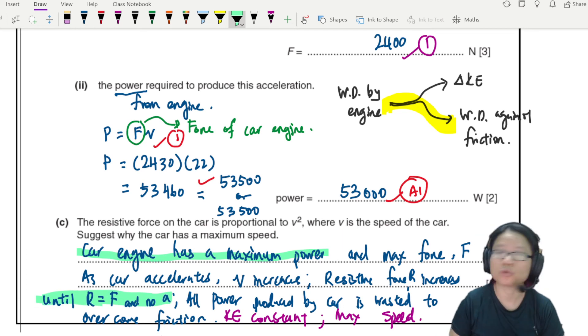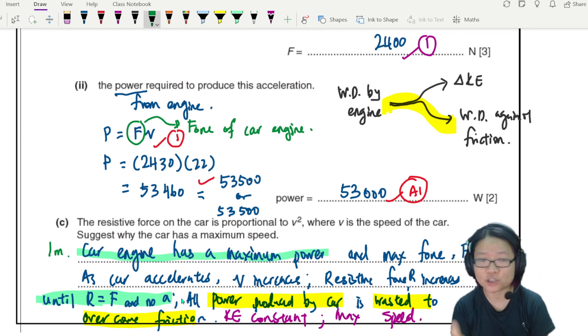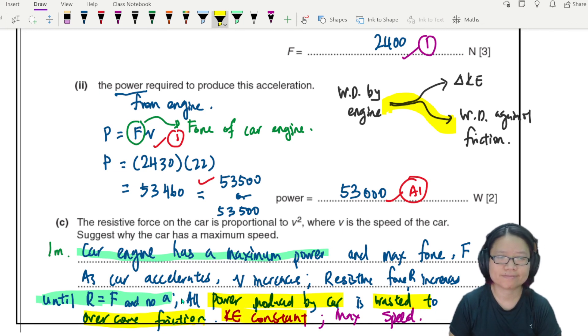So this is where the mark is. Or you could also say: power produced by the car wasted to overcome friction. So you can either write this one, the green color highlight, maximum power, until the resistance is equal to the power force of the engine, then there's no acceleration. Or you could say all the power loss now become heat, no KE change. This one is another option, one mark.